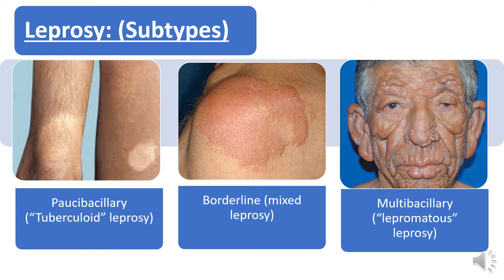How to distinguish between these three clinically? In Pauci-bacillary, there is a hypopigmented patch on the skin — hypopigmented means there is less pigment, but it is not completely gone. Pauci-bacillary is often confused with vitiligo. To differentiate: in Pauci-bacillary the skin is hypopigmented, but in vitiligo the skin is depigmented — meaning it is a chalky white, fully depigmented patch. In borderline and mixed leprosy, there is a raised, red, granulomatous patch which is hyperpigmented at the center but hypopigmented at the edges.